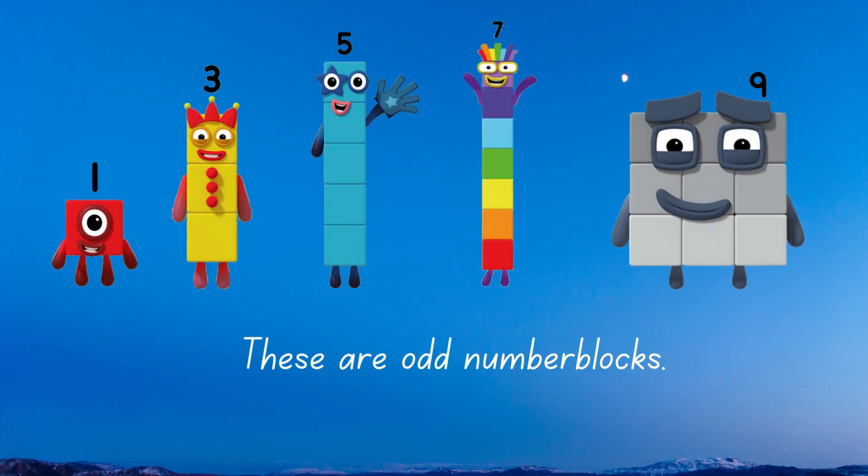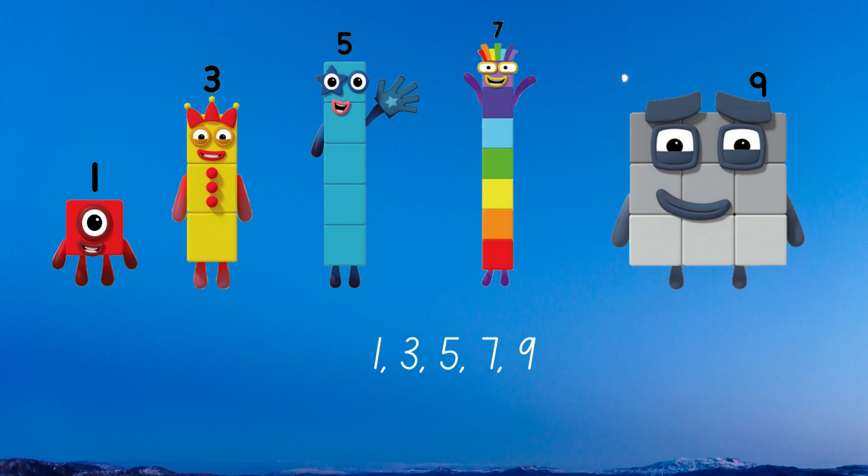These are odd number blocks: 1, 3, 5, 7, 9.